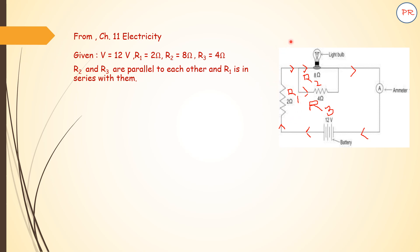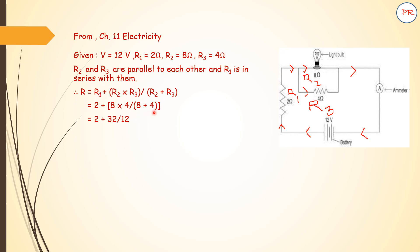The first step is to find the total resistance of the circuit. R = R1 + (R2 × R3) / (R2 + R3). Substituting: 2 + (8 × 4) / (8 + 4) = 2 + 32/12 = 2 + 2.66. So the total resistance is 4.66 ohms.